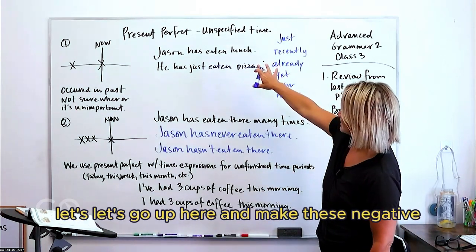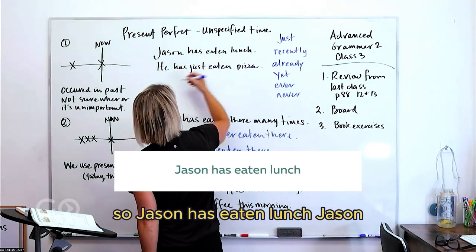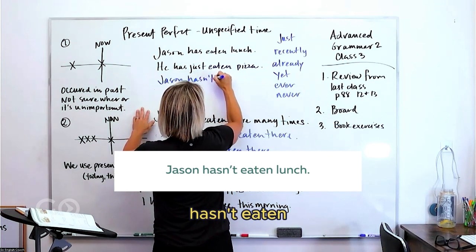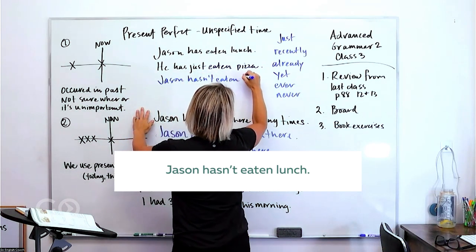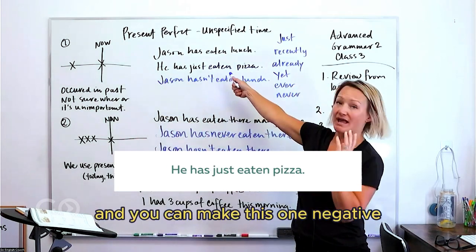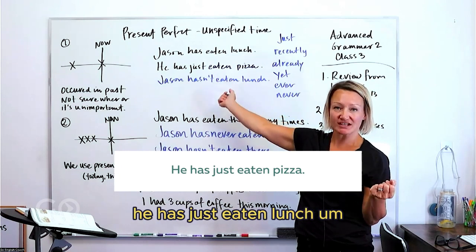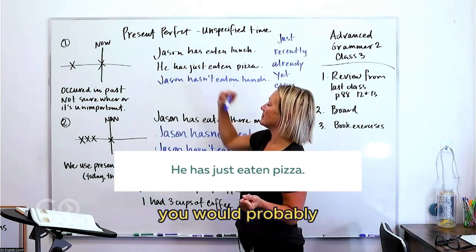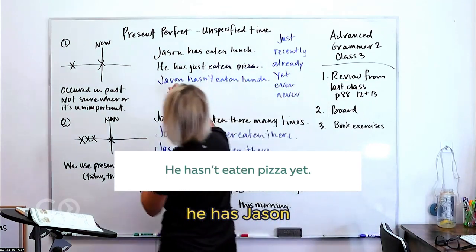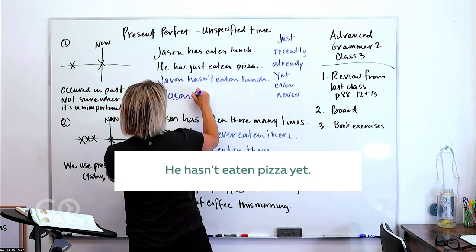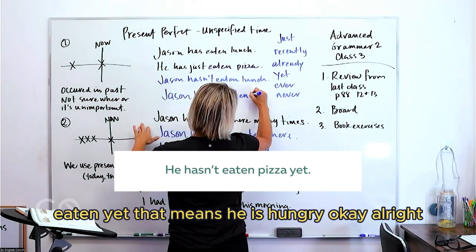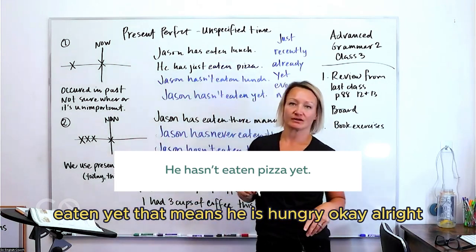Let's go up here and make these negatives. So Jason has eaten lunch. Jason hasn't eaten lunch. Okay. And you can make this one negative, he has just eaten lunch. You would probably just say he hasn't eaten yet. Okay, Jason hasn't eaten yet. That means he is hungry.